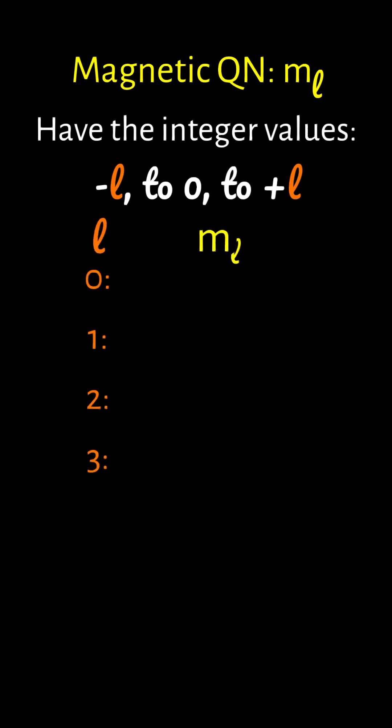So when l equals zero, m sub l equals zero. When l equals one, m sub l equals negative one, zero, positive one.